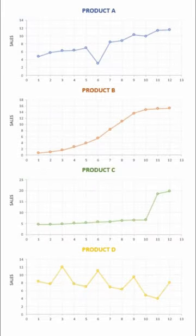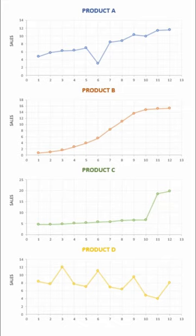Now at a glance I can tell you that Product A is climbing steadily with a dip in month six. Product B follows the logistic growth curve. Product C was relatively flat before spiking at the end of the year. And Product D seems to follow a quarterly seasonal pattern with spikes every third month. Crazy, right? That's the power of data visualization.